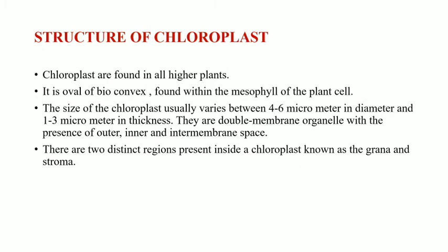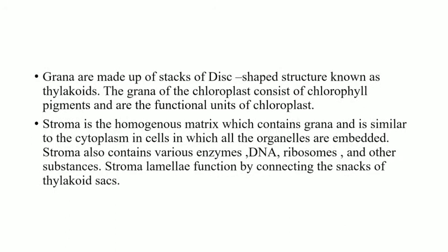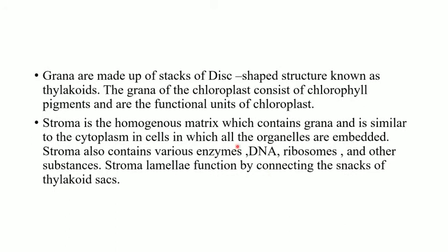The grana are made up of stacked structures known as thylakoids. The grana of the chloroplast consist of chlorophyll pigments and are the functional units of the chloroplast. The stroma is the homogeneous matrix which contains the grana and is similar to the cytoplasm present in cells, in which organelles are embedded.